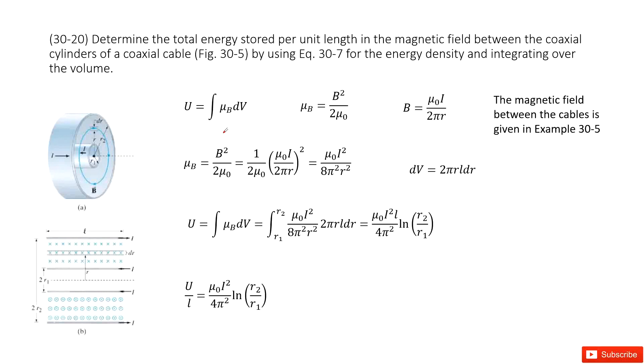So you can see we have this system, right? This is a coaxial cylinder of a coaxial cable. That means the inner cable and outer cable. And we need to find the total energy stored per unit length in the magnetic field in this space.